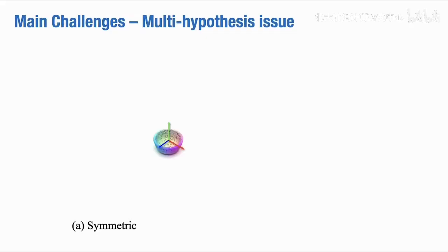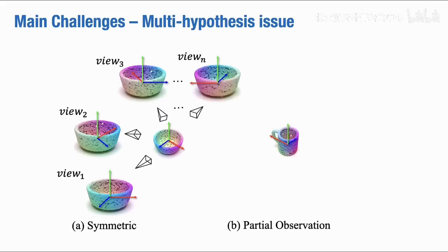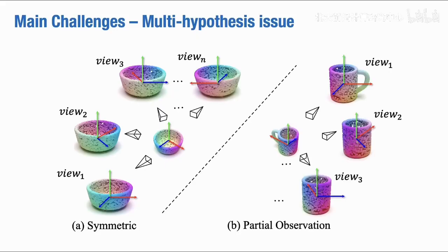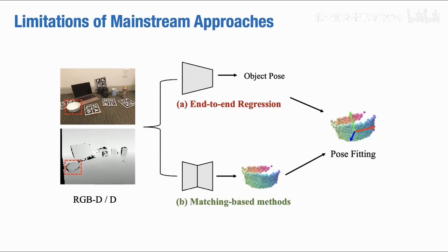In this work, we aim to tackle the multi-hypothesis issue that has existed in the literature for a long time. This issue is generally caused by partially observed point clouds or symmetric objects. Previous methods failed to solve this issue fundamentally. End-to-end regression methods could only be supervised with a single pose due to the regression-based training,